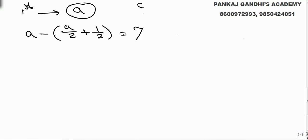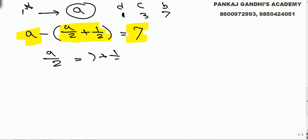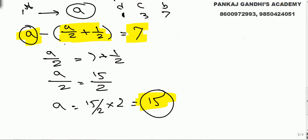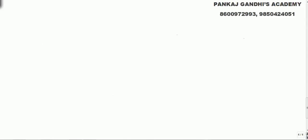At the end he had 1; before meeting the last guard he had 3; before meeting the second guard he had 7. So before meeting the first guard, he had a. Out of a he gave a/2 plus half, and remaining was 7. Solving: a minus a/2 minus 1/2 equals 7, so a/2 equals 15/2, meaning a equals 15. Before meeting the first guard he had 15 oranges.